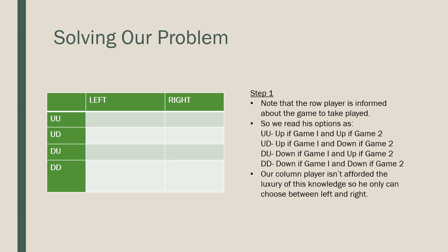UU means up if we're dealing with game one and up if we're dealing with game two. UD is up if it's game one and down if it's game two. DU is down if it's game one and up if it's game two. And DD is down if it's game one and down if it's game two.